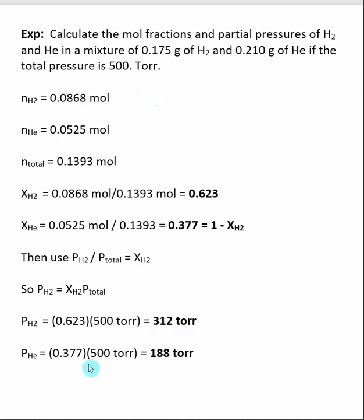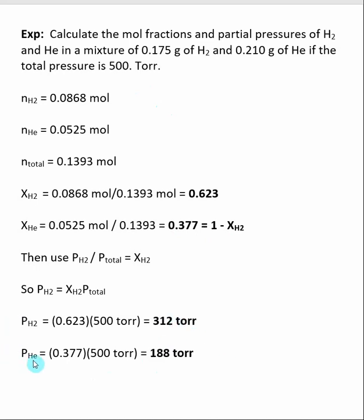We can do the same calculation for the partial pressure of helium. We found the mole fraction of helium and multiply that by the total pressure to get that the partial pressure due to helium is 188 torr. We should also be able to add the partial pressure of hydrogen and the partial pressure of helium to verify that we get the total pressure of the system.